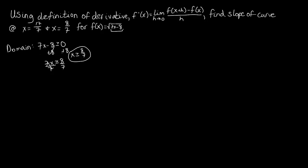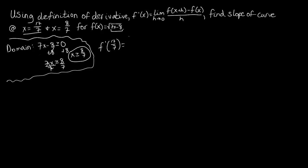We see that both x values we're concerned with fit inside that parameter. 8 over 7 equals 8 over 7, and 17 over 7 is definitely greater than 8 over 7. So we don't have anything to rule out just yet. Now that we've established the domain and know these x values are within it, we're going to start evaluating the derivative. The first one we want to do is 17 over 7, so let's evaluate f prime of 17 over 7, which translates by the definition of the limit to f of 17 over 7 plus h minus f of 17 over 7, all over h.